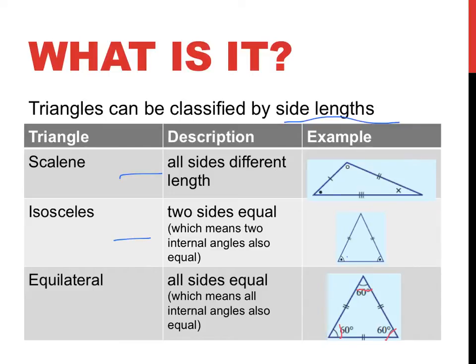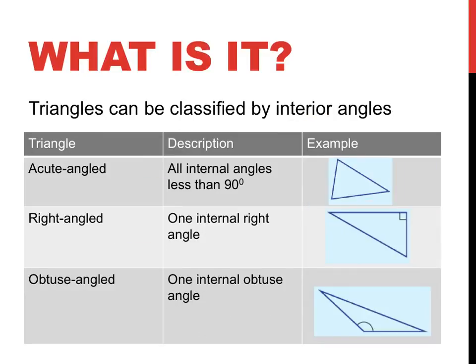And so triangles classified by the size of their angles or their interior angles. Acute angles, all angles are less than 90 degrees. All of them have to be less because a right angle triangle can at least have one acute angle in it. Look, I've got an acute angle there and acute angle there.